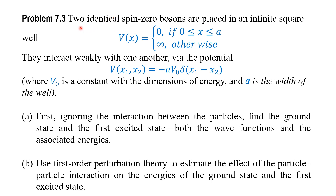The problem is: we have two identical spin-zero bosons placed in an infinite square well, for which the potential V(x) equals 0 between 0 and A (where A is the width of the box) and is infinite otherwise. We assume they interact weakly via the potential V(x₁, x₂) = −A·V₀·δ(x₁ − x₂), where V₀ is a constant with dimensions of energy and A is the width of the well.